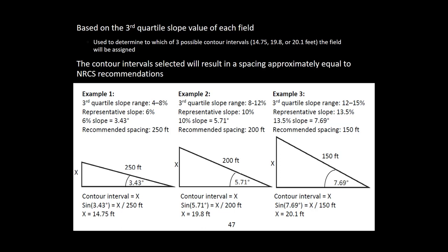There are three options. The contour interval selected will result in a spacing approximately equal to the NRCS recommendation shown before. You can see below the method used to calculate the appropriate spacing for each contour buffer strip.